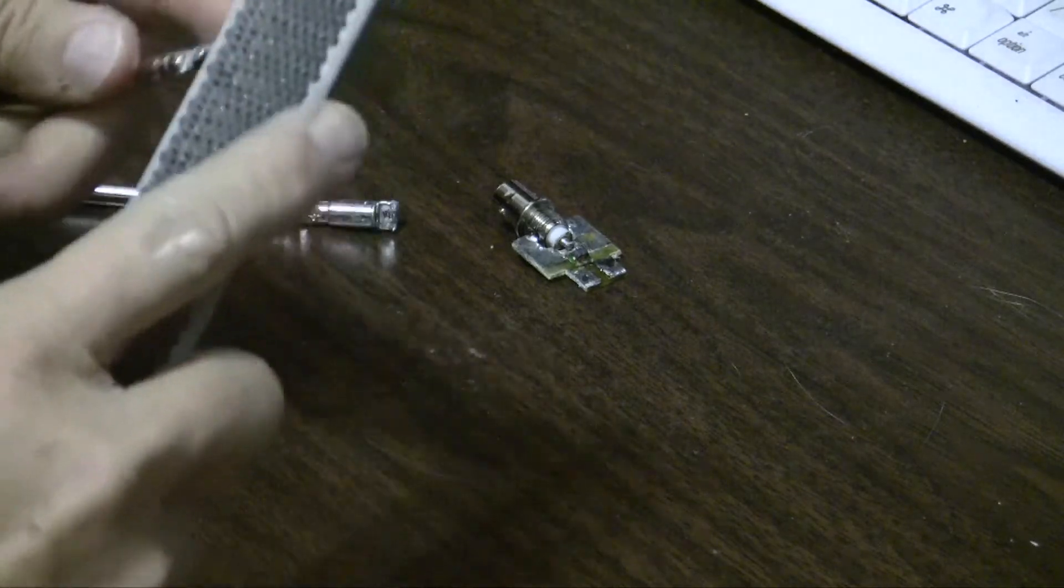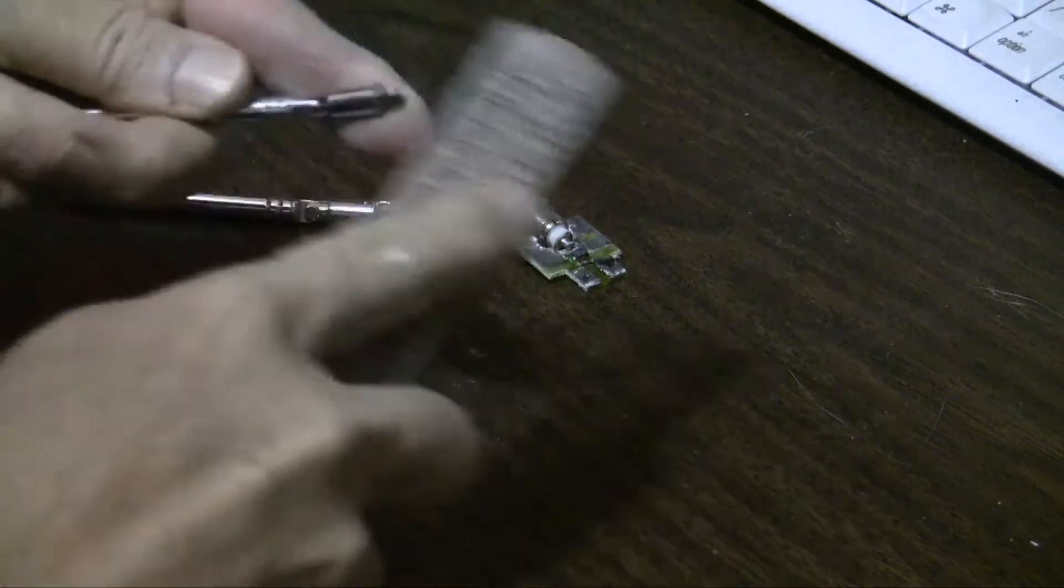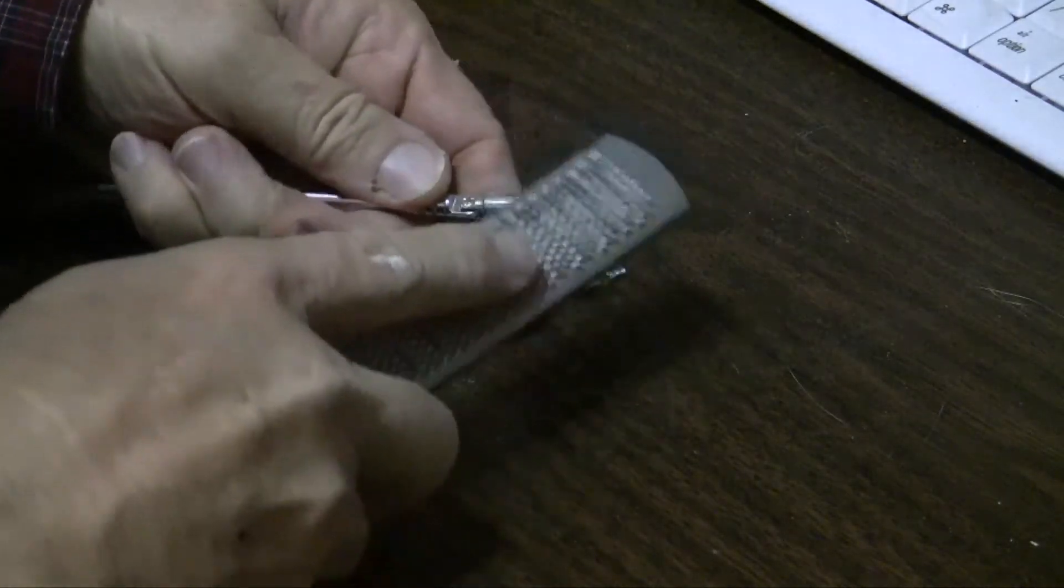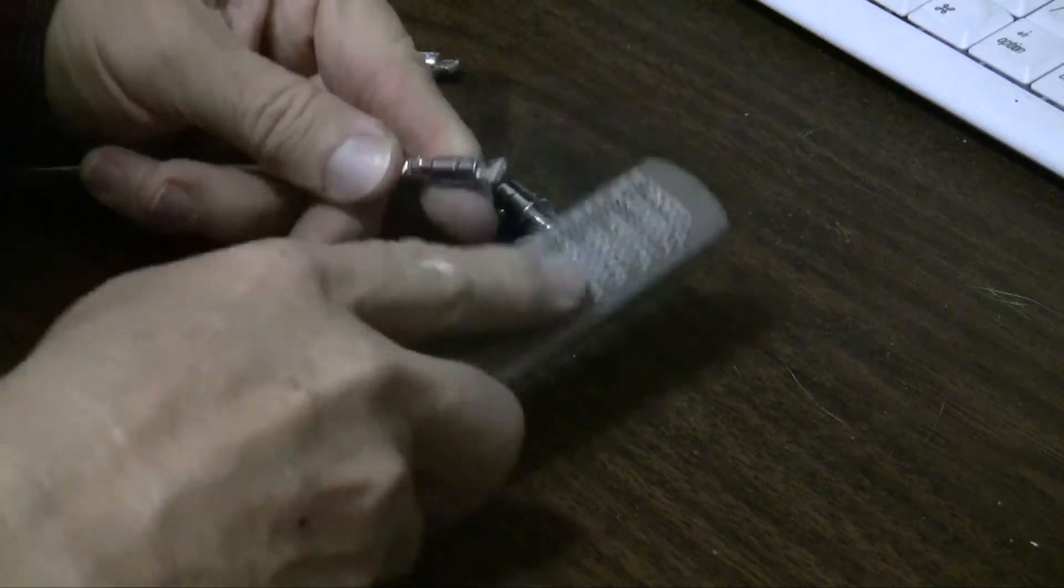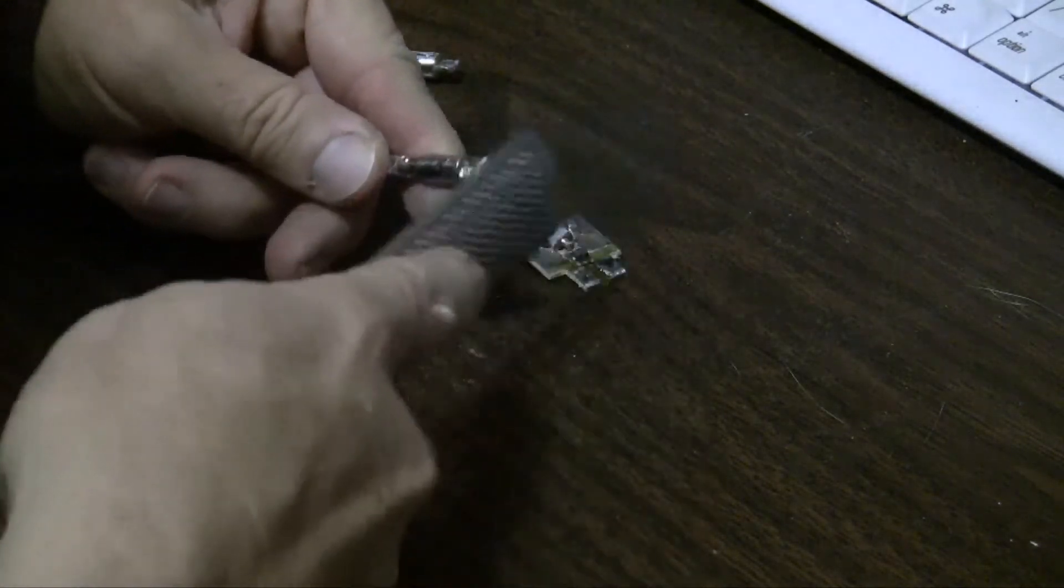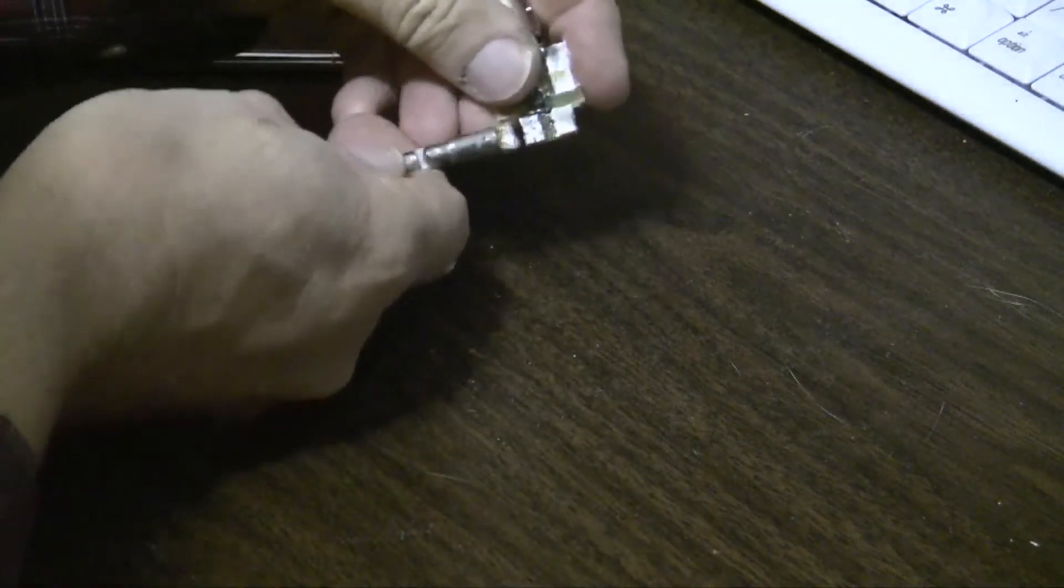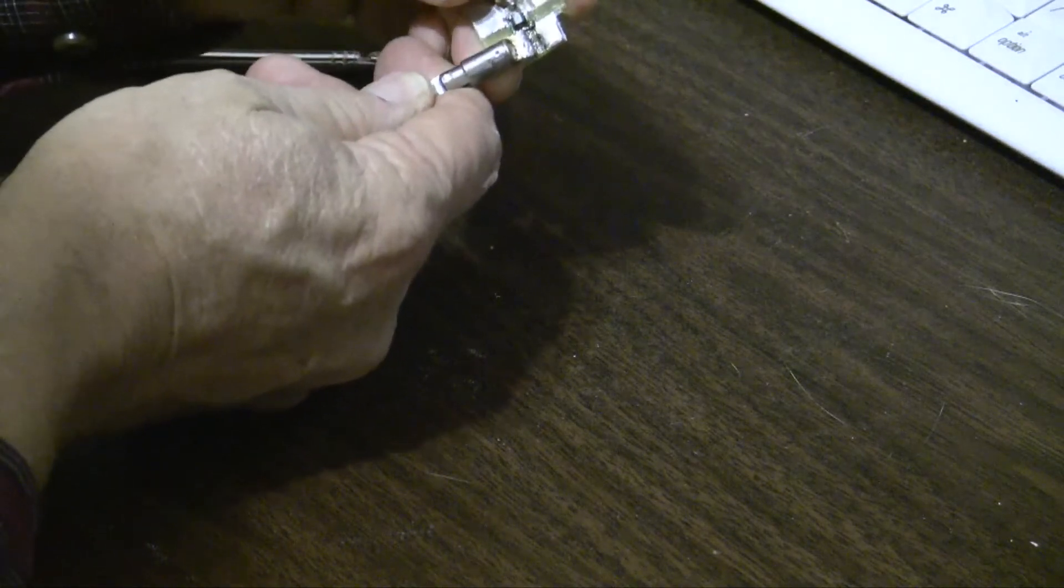I'll hit it with a file here to get rid of any little edges that might still be there. I did that on the grinding wheel as well. Now as you can see we just make the gap here. And same on this side.